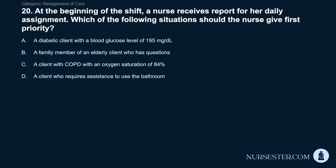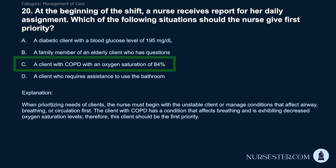Question 20: At the beginning of a shift, a nurse receives report. Which situation should the nurse give first priority? A) A diabetic client with blood glucose of 195 mg/dL. B) A family member with questions. C) A client with COPD with oxygen saturation of 84%. D) A client who requires assistance to use the bathroom. Correct answer: C. A client with COPD and oxygen saturation of 84%. When prioritizing, the nurse must begin with unstable clients or those with conditions affecting airway, breathing, or circulation first. The COPD client has decreased oxygen saturation and should be the first priority.